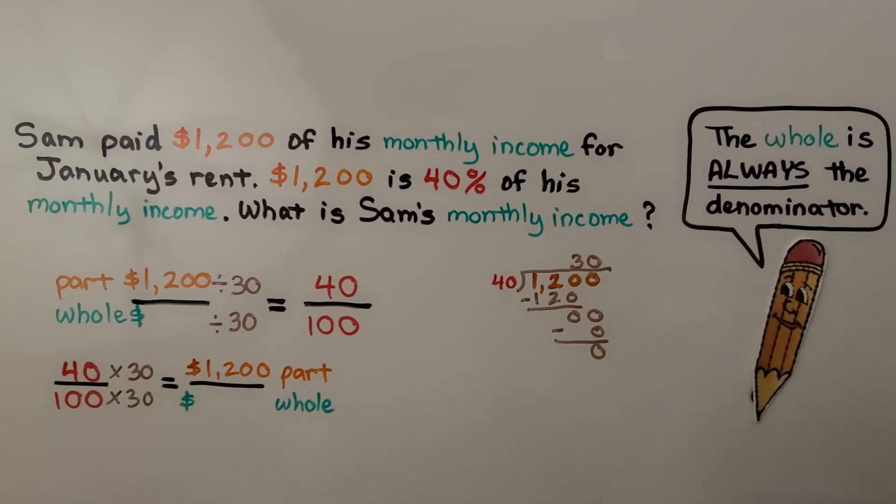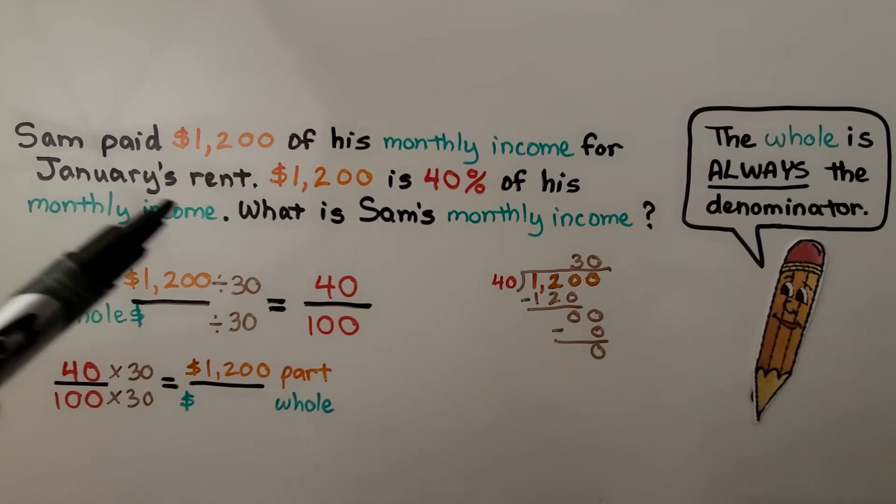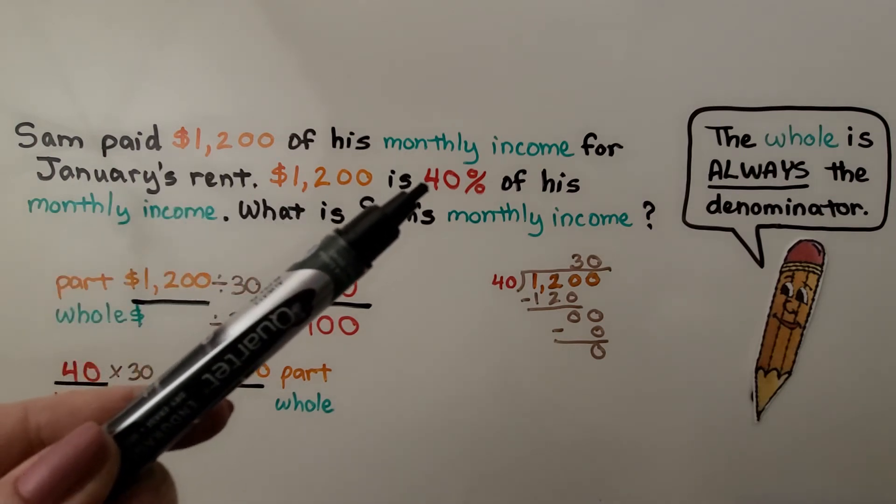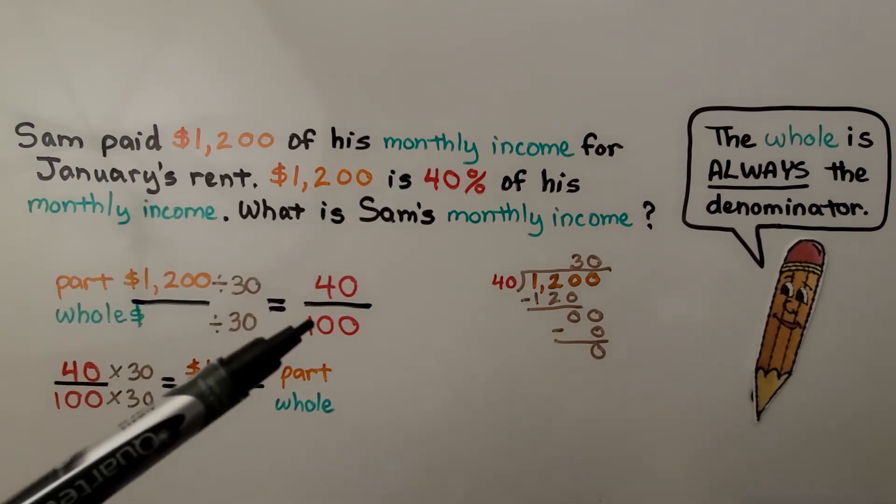Sam paid $1,200 of his monthly income for January's rent. $1,200 is 40% of his monthly income. What is Sam's monthly income? So we know the part—that's the rent—that's $1,200.